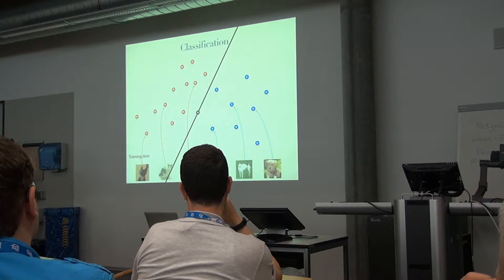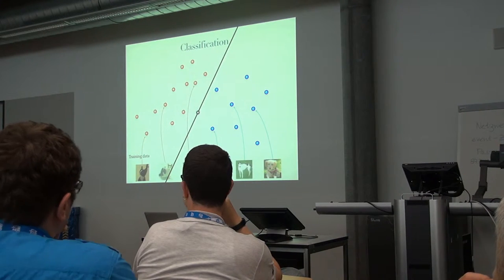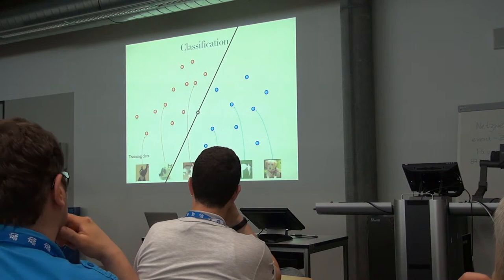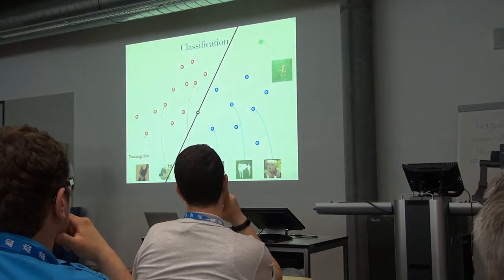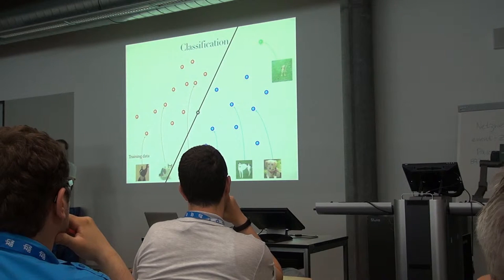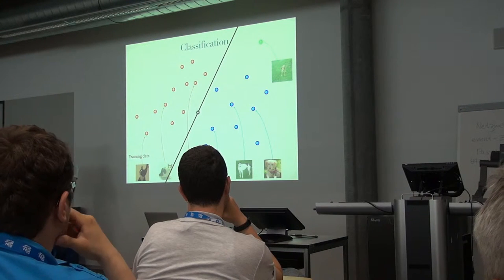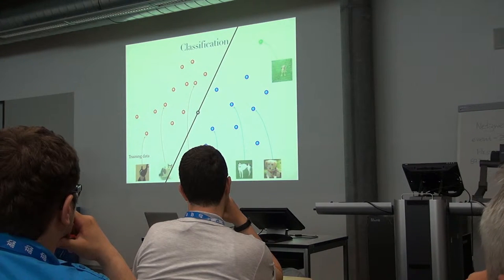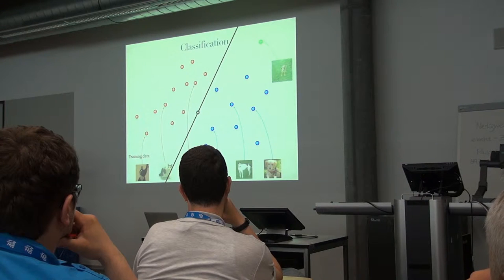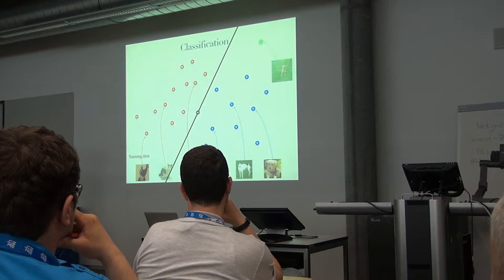Now we've seen how to use and evaluate the trained model. When a new picture arrives — a test point, not a training point — we don't know the answer. What the model does is check which side of the plane the point lies on. If it's on the right side, the system answers: it's a dog. That's how this works.